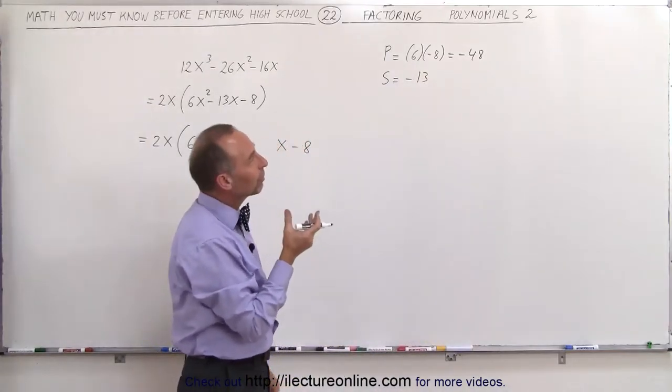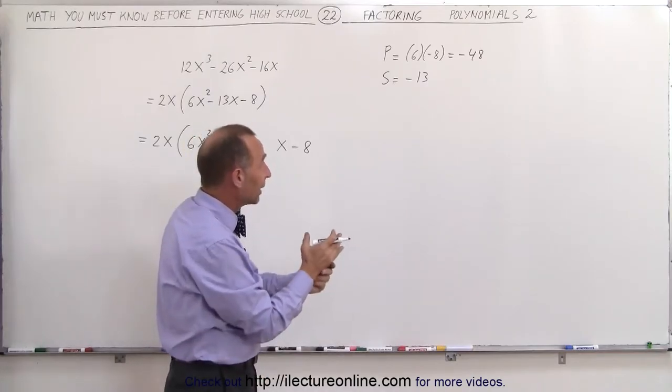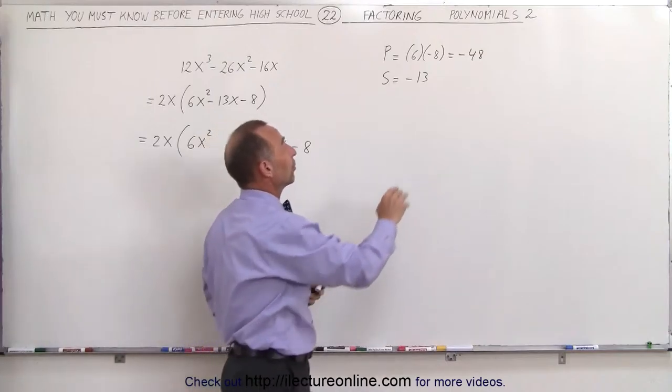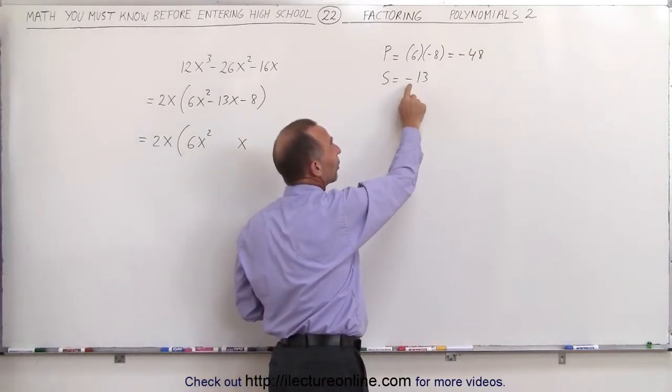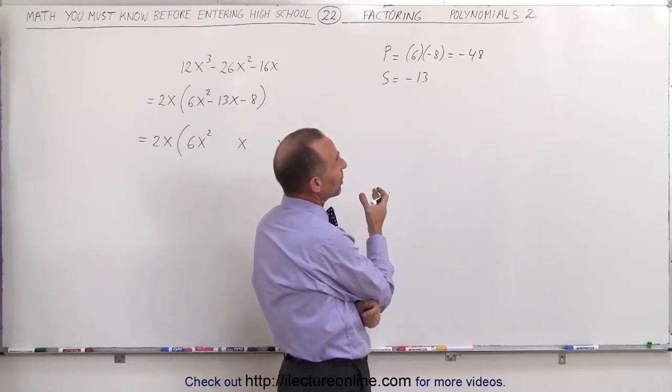So what numbers can I multiply together to get negative 48, and when I add them together, I get negative 13? That means one number must be 13 bigger than the other number, and it must be the negative one. How about 16 times 3?